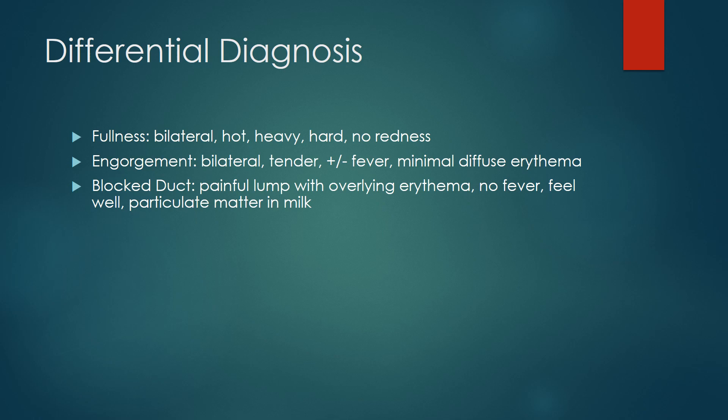Differential diagnoses include engorgement, which presents with fullness, bilateral heaviness, no redness, bilateral tenderness, plus or minus fever, and minimal diffuse erythema. Blocked duct presents with a painful lump with overlying erythema and no fever.